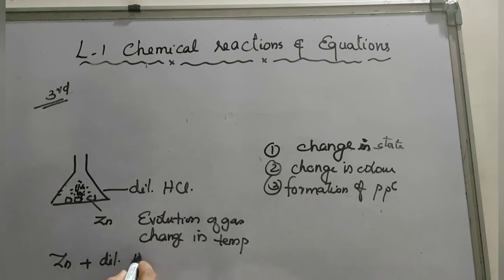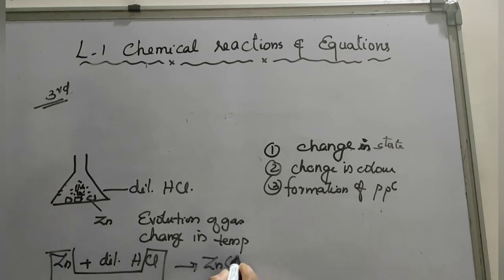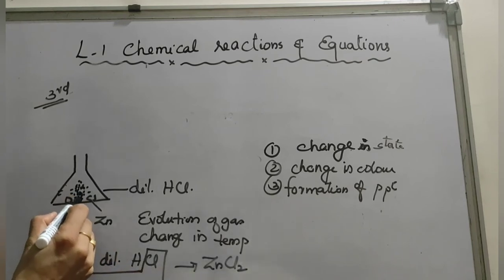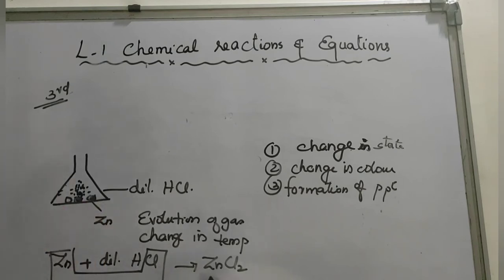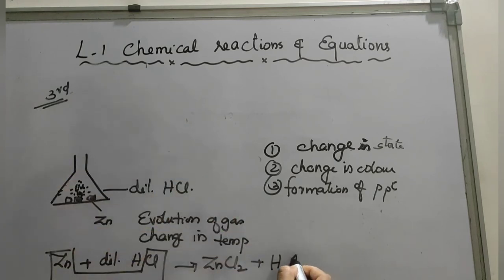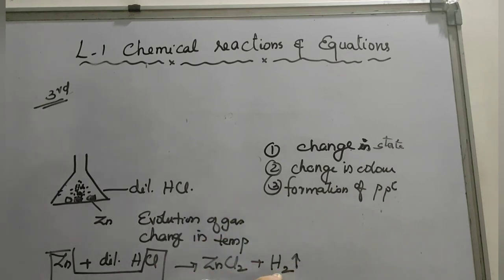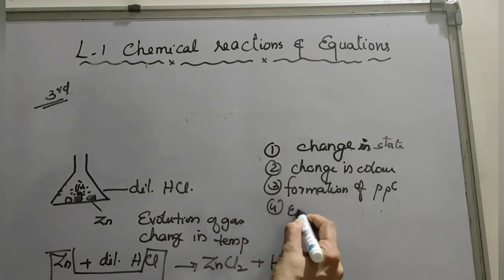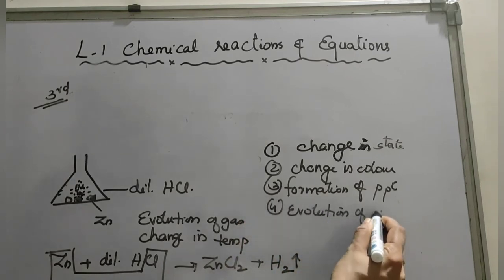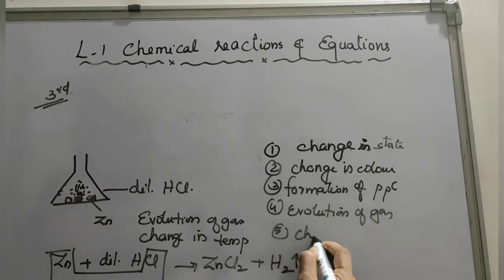The equation is: Zn + HCl → ZnCl₂ + H₂. Zinc reacts with hydrochloric acid to form zinc chloride, which is blackish in color, and hydrogen gas is released — evolution of gas is shown with an up arrow, whereas precipitate is shown with a down arrow. From this activity, the changes observed are evolution of gas and change in temperature.